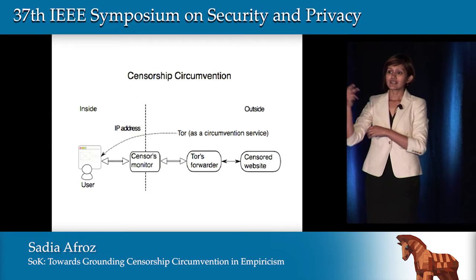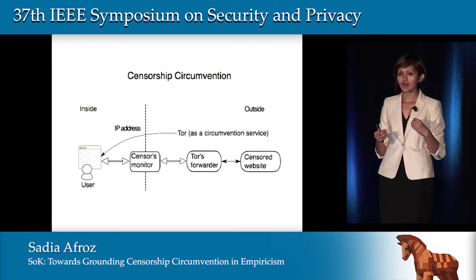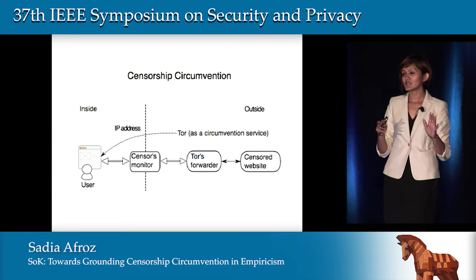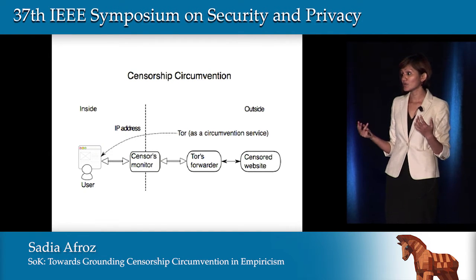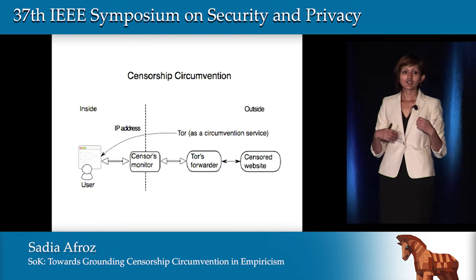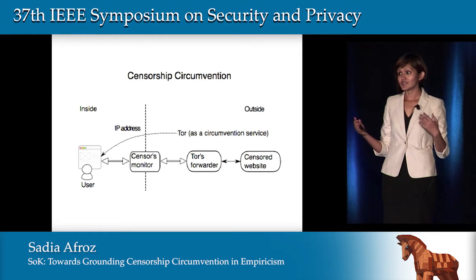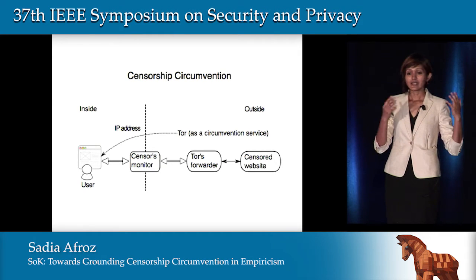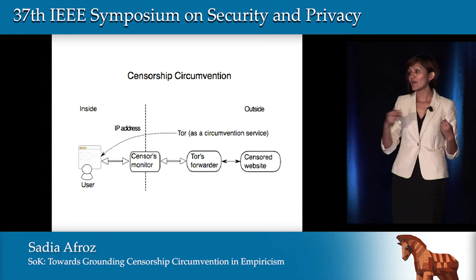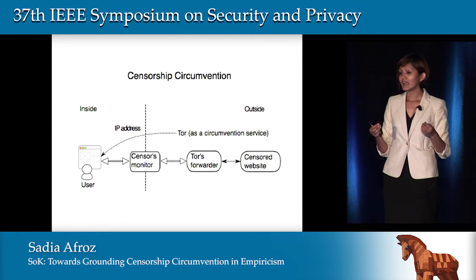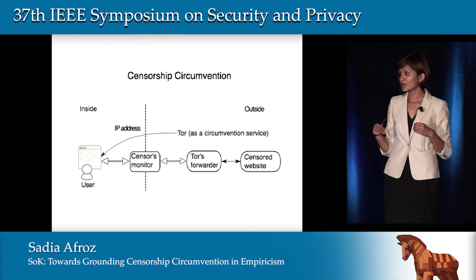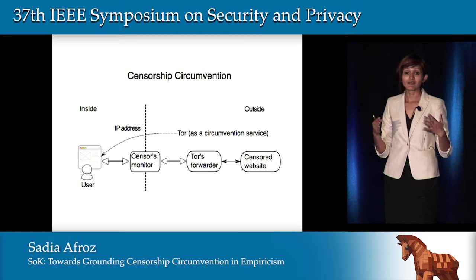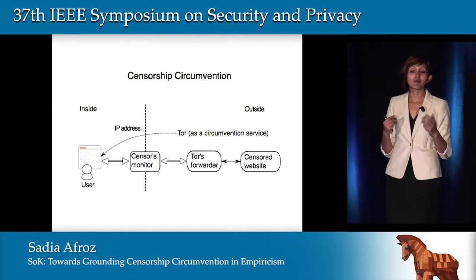Let's look at censorship circumvention in the real world with an example. Suppose you have a user in a censored country, for example China, that wants to access a censored website — say, a Wikipedia page that is blocked in China. That user can download a circumvention system like Tor, install it, and use Tor to bypass the censor. But censors like China already know people are doing this, so most Tor relays are now blocked in China. If a user wants to use Tor in China, they have to obfuscate their traffic to Tor.